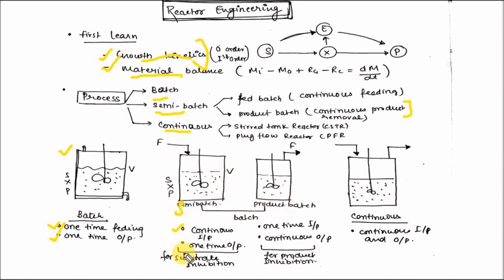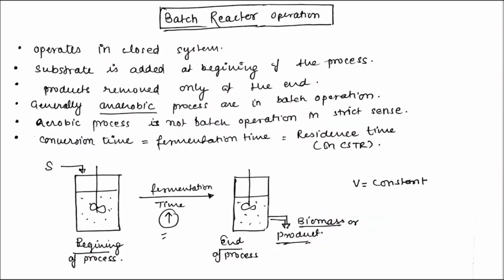In fed batch, substrate is added at intermittent intervals into the reactor with one-time extraction of output. In product batch, there is one-time feeding at the beginning of the process and continuous or intermittent extraction of the output. In a continuous process, both continuous input and continuous output occur.